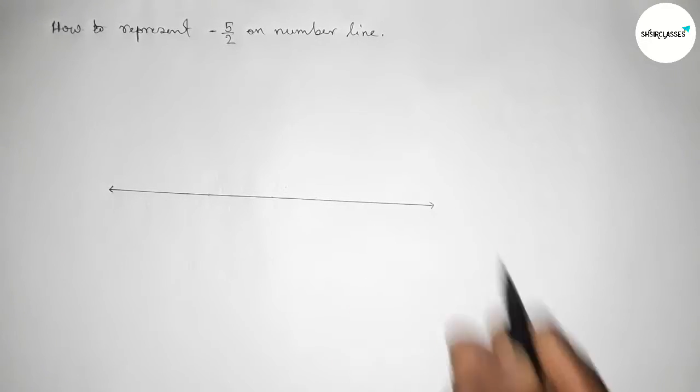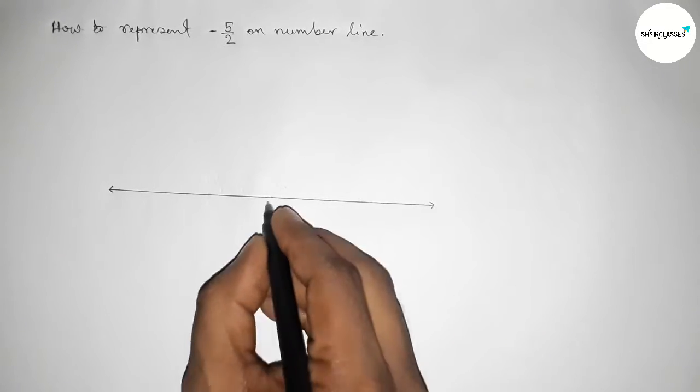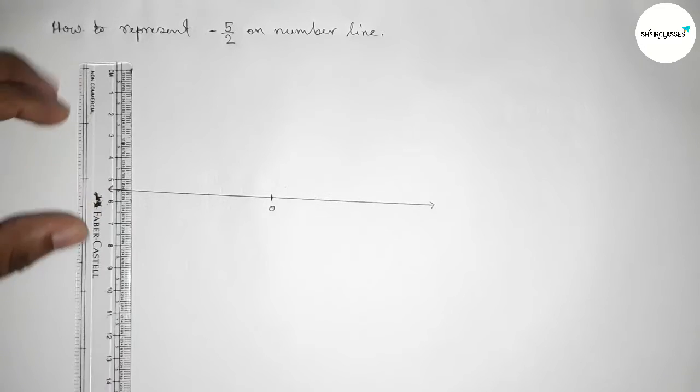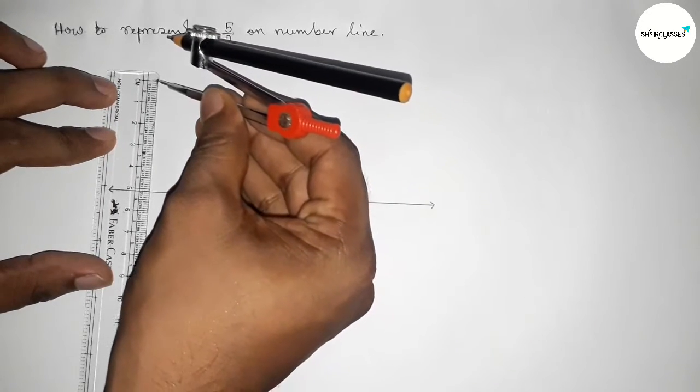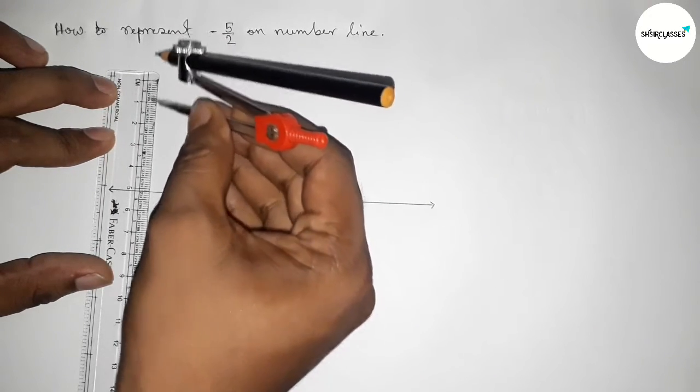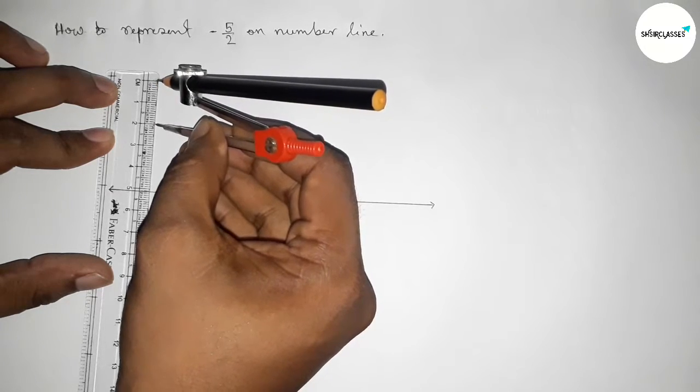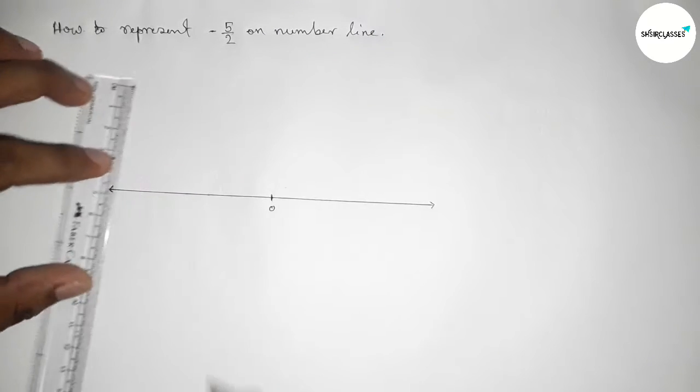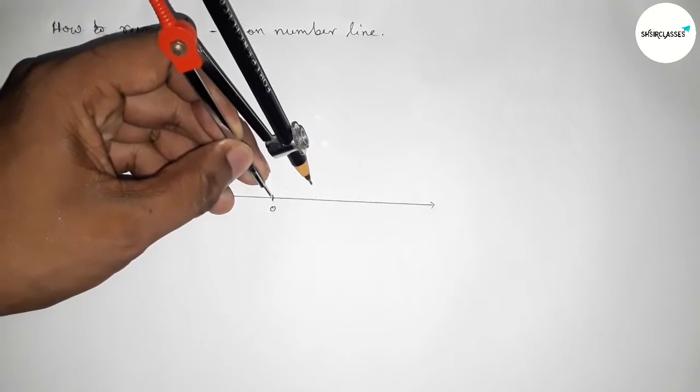Next taking here the starting number zero. Now we have to take a length by using scale, so taking here two centimeter length by using compass by this way and putting the compass on the point zero and cut here and cut here.